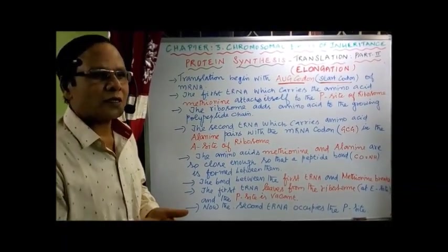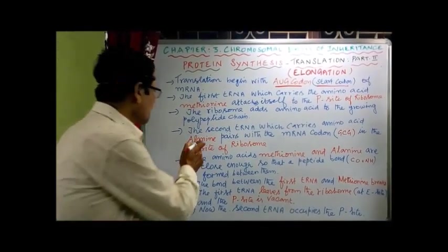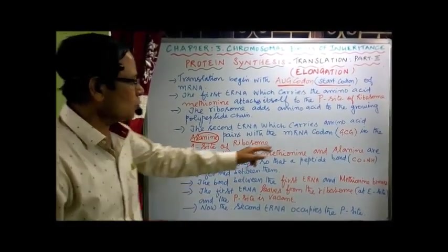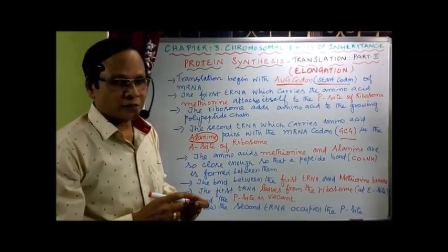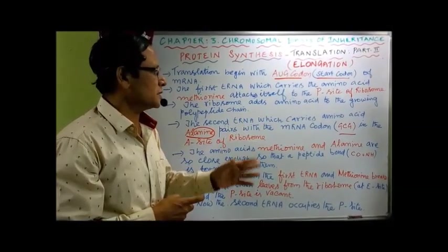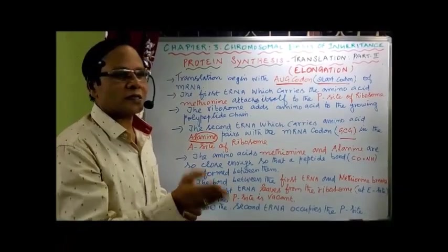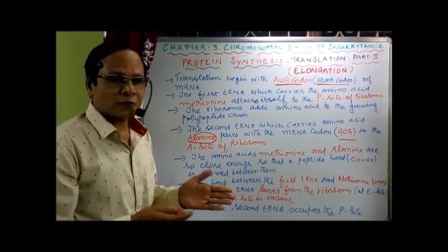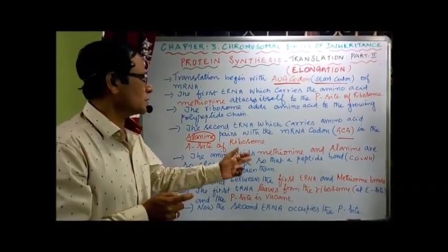Now the second tRNA with another amino acid — in the book it is given as alanine — carries amino acid alanine, called alanine tRNA. It pairs with the mRNA codon GCT coding for alanine in the A-site of the ribosome, because the P-site already has one tRNA. The second tRNA is attached to the A-site. Now the amino acids methionine and alanine are present so closely together that a peptide bond is formed between them.